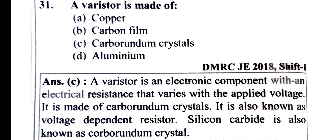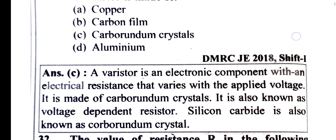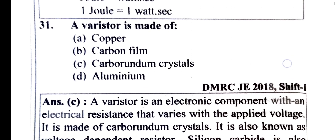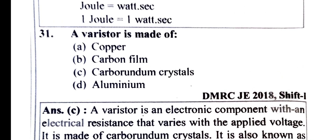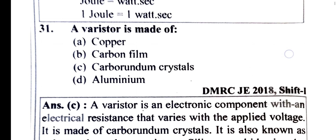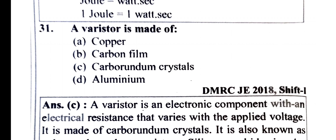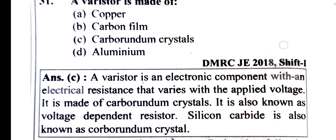Now we will start. Aluminium — this is an electronic component with an electrical resistance that varies with applied voltage. Electrical resistance varies. Carborundum crystals, also known as dependent resistor. Silicon carbide is also known as carborundum crystal. Option C.